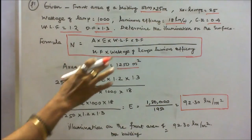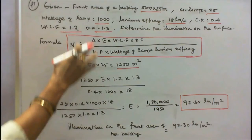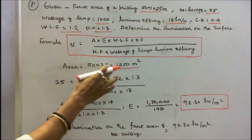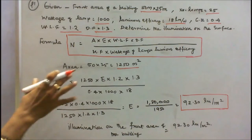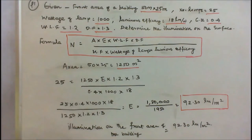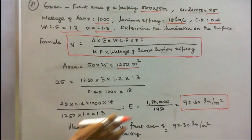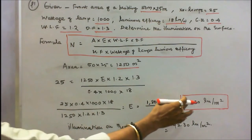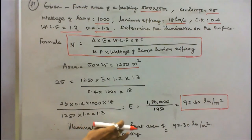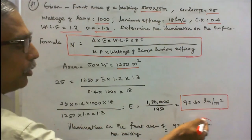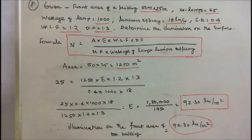Area = 50 × 25 = 1250 square meters. Substituting all values and solving for E, the illumination is equal to 92.30 lumens per meter square. Therefore, illumination on the front area of the building is 92.30 lumens per meter square.